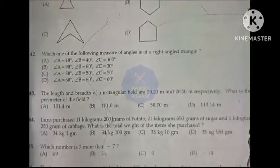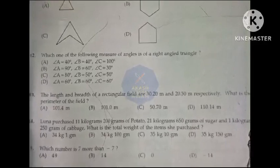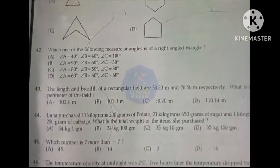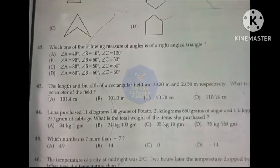Option B, 34 kg 100 gram. Which number is 7 more than minus 7?